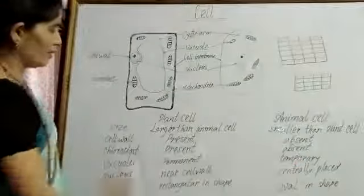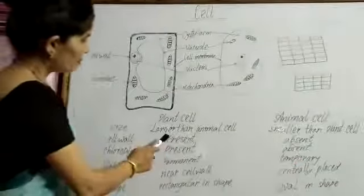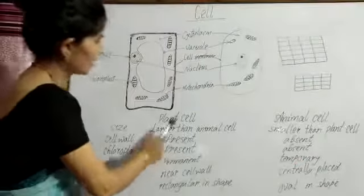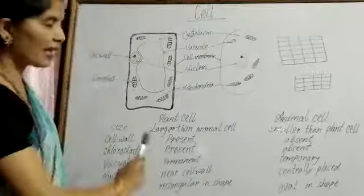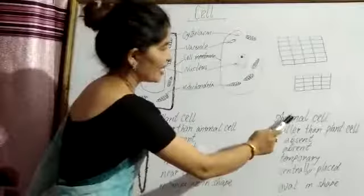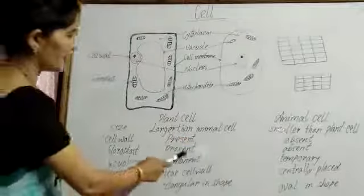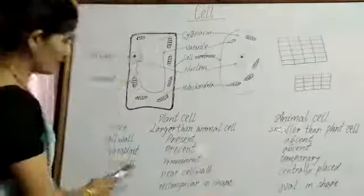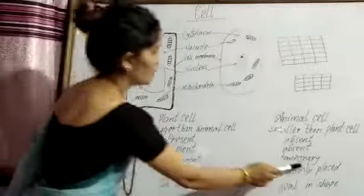Cell wall: present in plant cell, absent in animal cell. Chloroplast: present, absent. Vacuole: permanent, temporary.